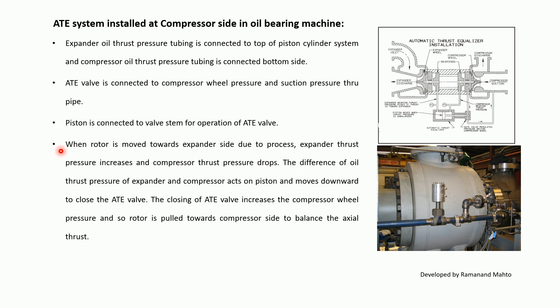When the rotor moves towards the expander side due to process conditions, expander thrust pressure increases and compressor thrust pressure drops. The difference in oil thrust pressure between expander and compressor acts on the piston and moves it downward to close the AT valve. Closing the AT valve increases the compressor wheel pressure, so the rotor is pulled towards the compressor side to balance the axial thrust.